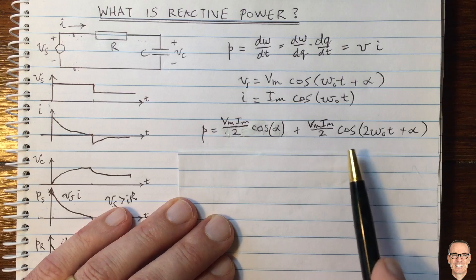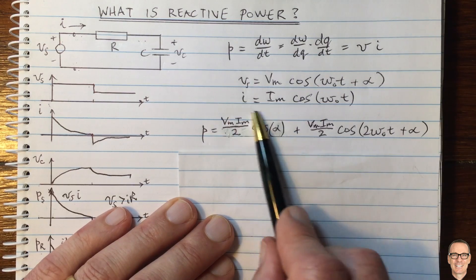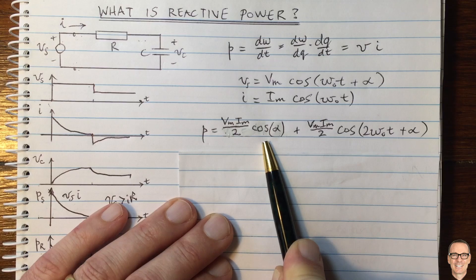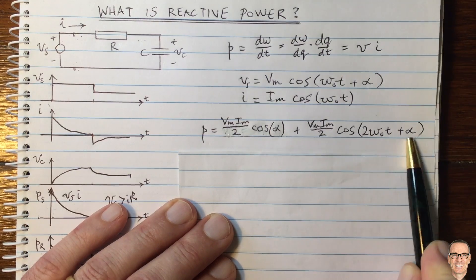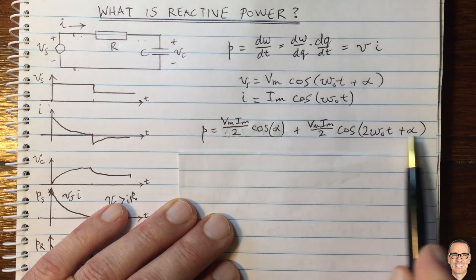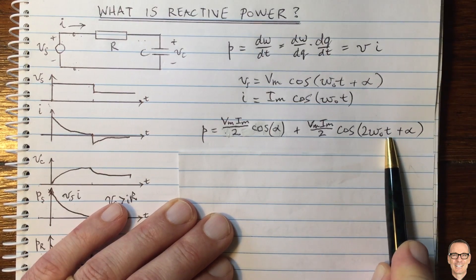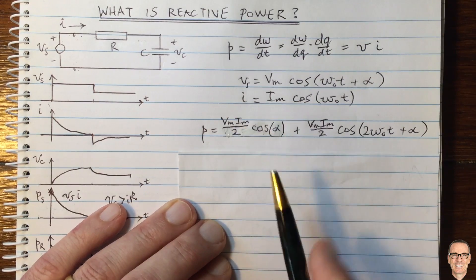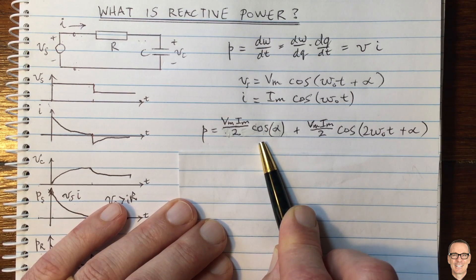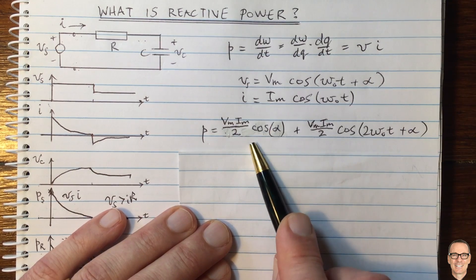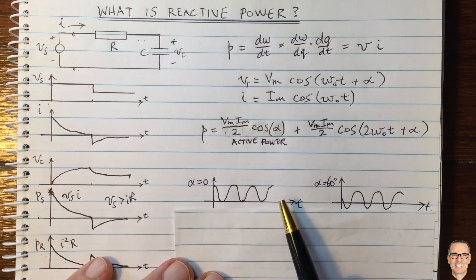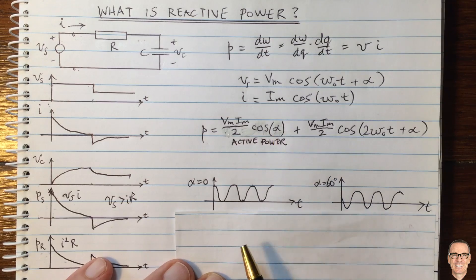Multiplying voltage and current together and using the trigonometric expression gives two terms: one constant term that does not depend on time, and one that does. The constant term is the average power delivered into the circuit — the other is a cosine wave that oscillates between positive and negative with an average of zero over time. This constant term is what electrical engineers call the active power.